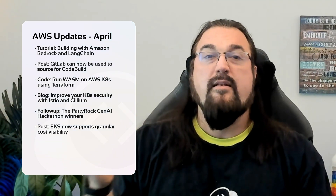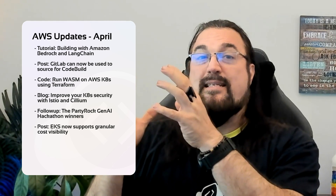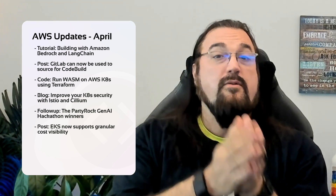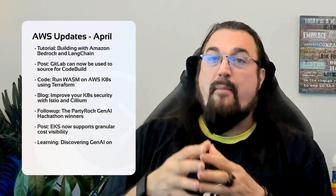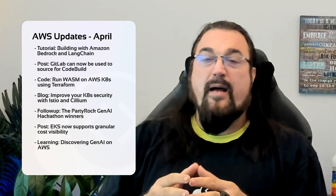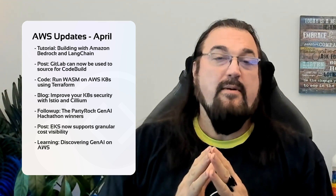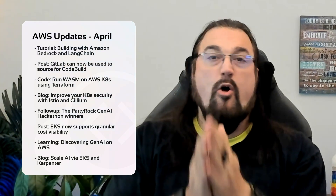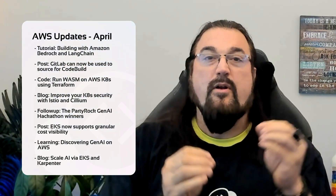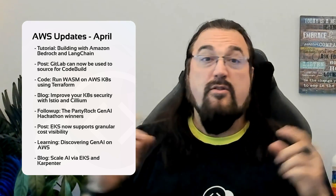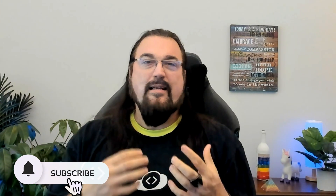We're also going to talk about EKS, which is now part of the cost and usage report inside AWS, allowing you to do detailed insights for cost management and chargeback. We'll dive into a learning portal about generative AI on AWS from the popular series called Let's Architect. And last but not least, we've been talking about Karpenter almost every month — this time we'll cover how to scale AI workloads with Karpenter and the Elastic Kubernetes Service. Join us for this in-depth analysis, some discussions, tutorials, and code. If you like what you see, let us know, send comments, subscribe, and hit like.